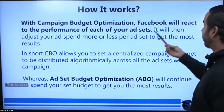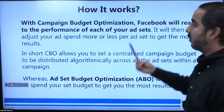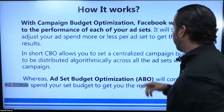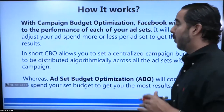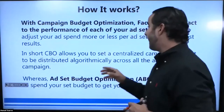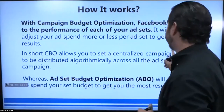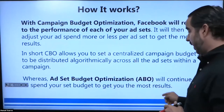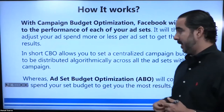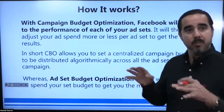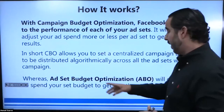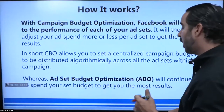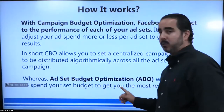With CBO, Facebook will react to the performance of each of your ad sets. It will then adjust your ad spend more or less per ad set to get the most results. In short, CBO allows you to set a centralized campaign budget to be distributed algorithmically across all the ad sets within a campaign. Whereas ad set budget optimization, ABO, will continue to spend your set budget to get you the most results.